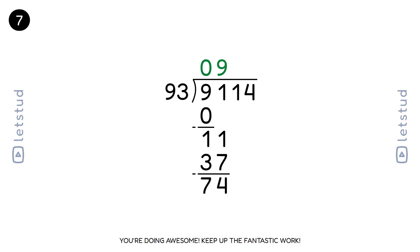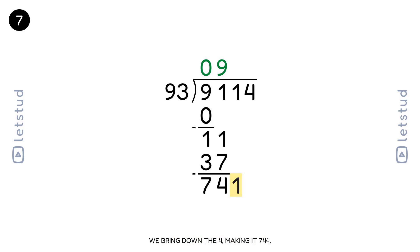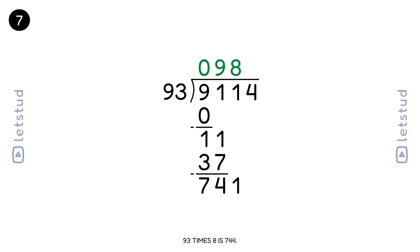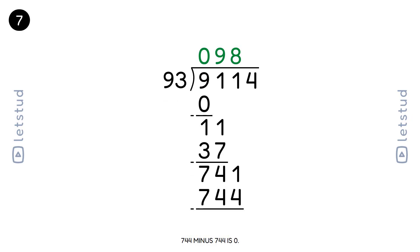You're doing awesome, keep up the fantastic work. Let's bring down the last digit, 4, making it 744. 93 fits into 744 eight times. 93 times 8 is 744. 744 minus 744 is 0.